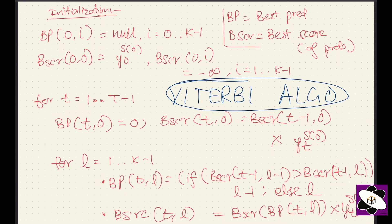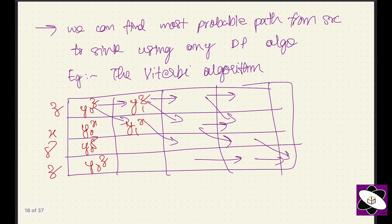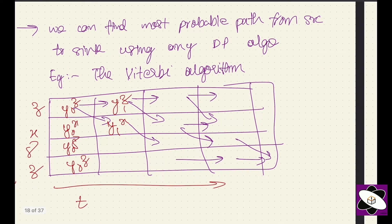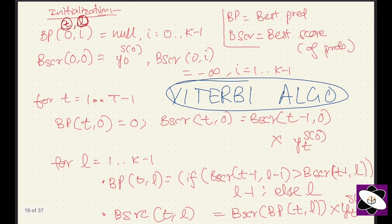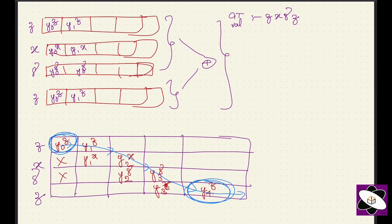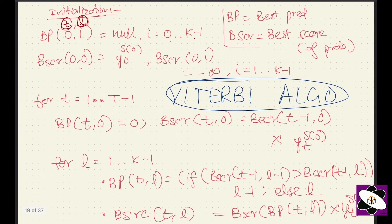The Viterbi-like DP finds the maximum over cells. Here t is the timestamp (column) and l is the row (symbol index). For t=0, we initialize bp(0, i) as null — blocking all cells except the first — because the first word must always be the first GT symbol. We assign minus infinity to blocked cells.